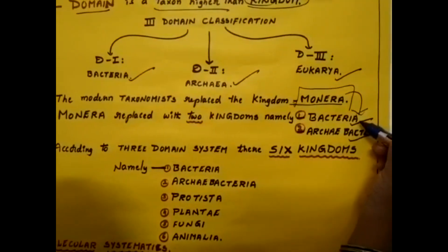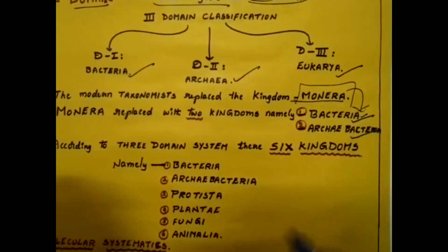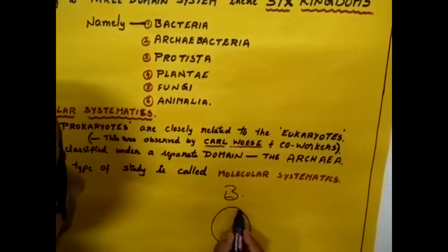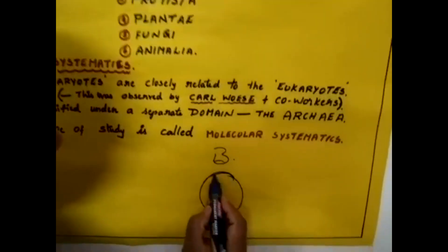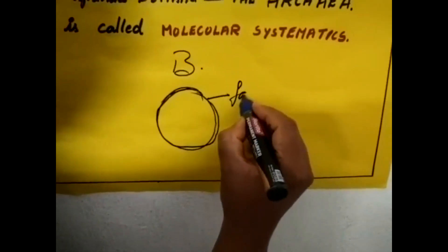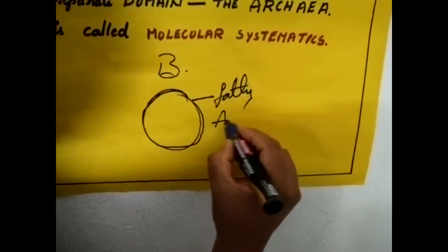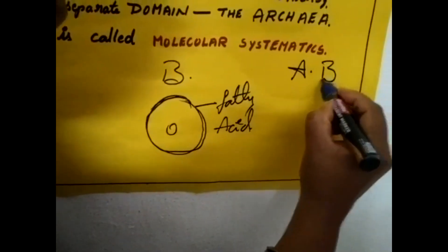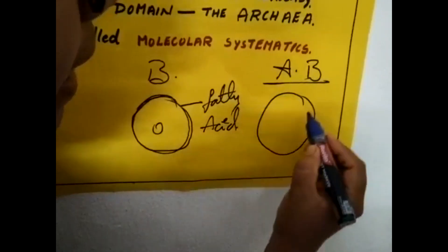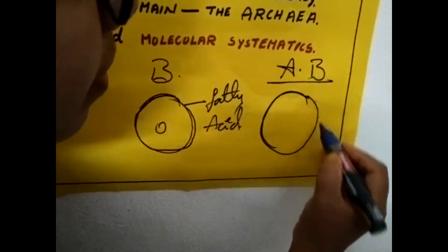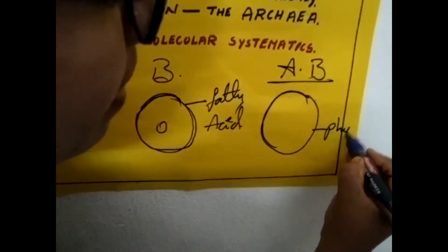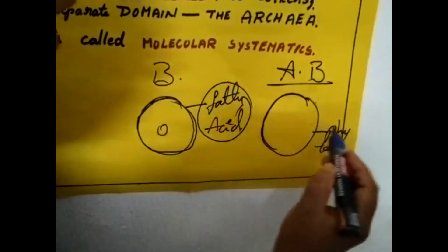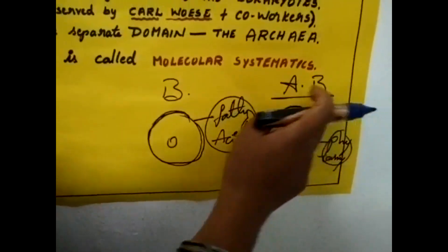What is the difference between Bacteria and Archaebacteria? In Bacteria, the cell membrane is made up of fatty acids. But in Archaebacteria, the cell membrane is made up of phytanyl. This is the only difference between Bacteria and Archaebacteria.